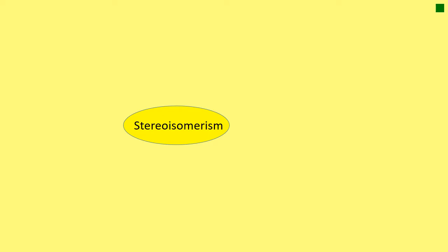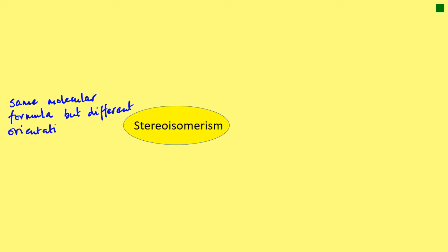It all starts with stereoisomerism, which you may have come across before. The definition of stereoisomerism is when you get the same molecular formula but a different orientation of the bonds. That is stereoisomerism, and there are two types.